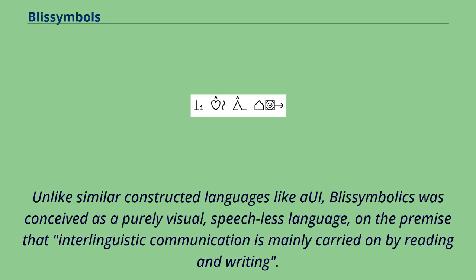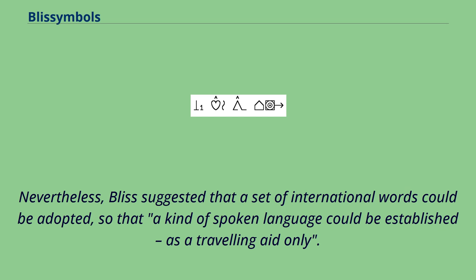Unlike similar constructed languages like Aoi, Bliss Symbolics was conceived as a purely visual, speechless language, on the premise that interlinguistic communication is mainly carried on by reading and writing. Nevertheless, Bliss suggested that a set of international words could be adopted, so that a kind of spoken language could be established, as a traveling aid only.